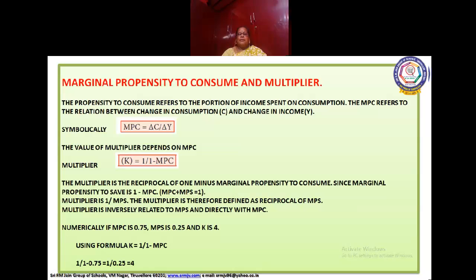MPS is Marginal Propensity to Save and MPC is Marginal Propensity to Consume. Numerically, if MPC is 0.75 and MPS is 0.25, then K equals 4. Using the formula: K = 1 / (1 − MPC) = 1 / (1 − 0.75) = 1 / 0.25 = 4.